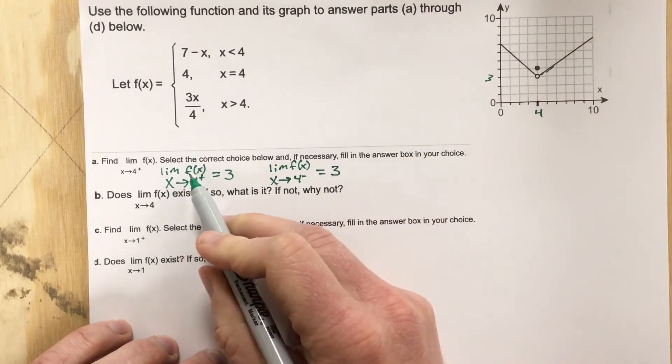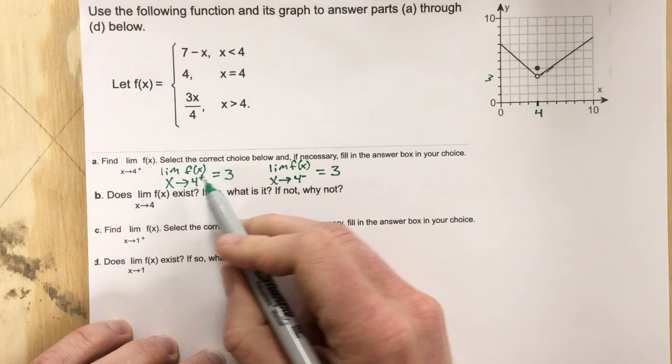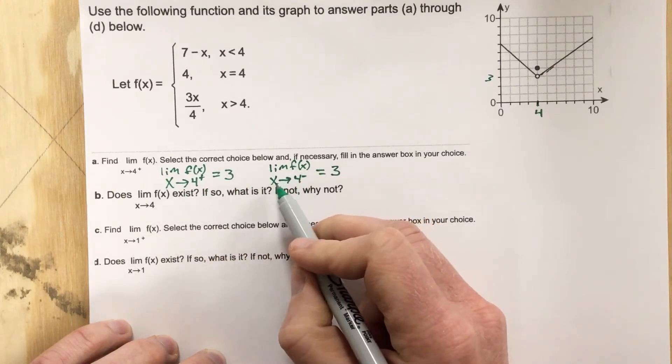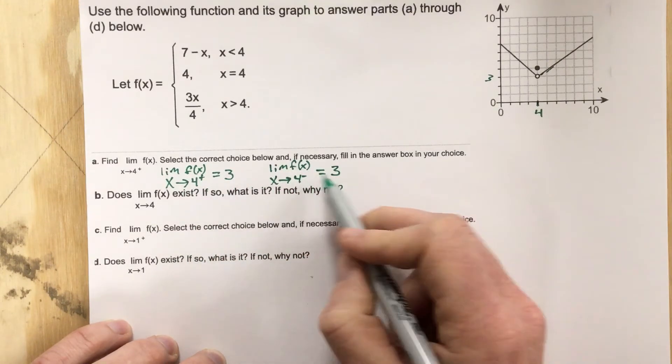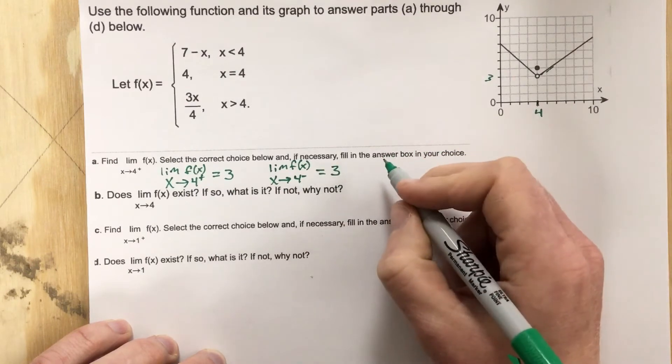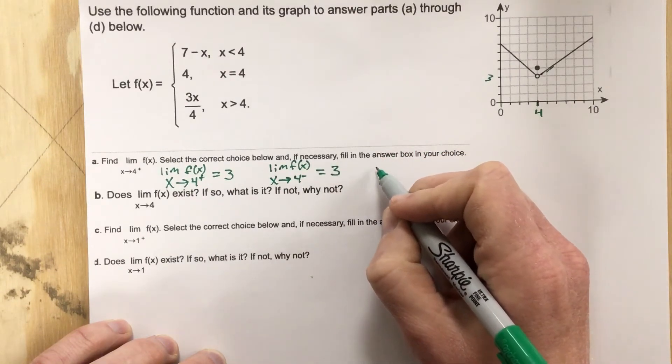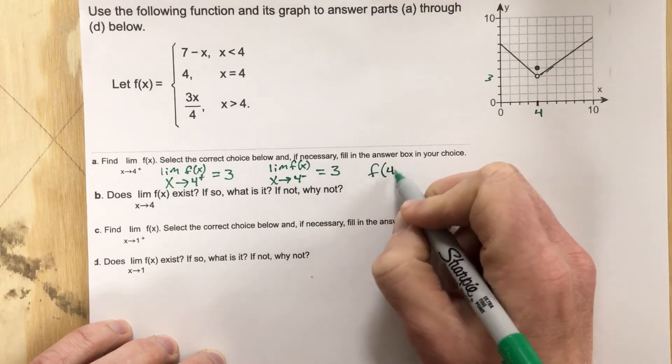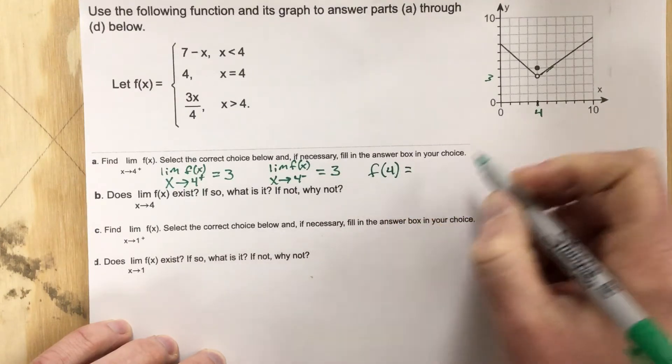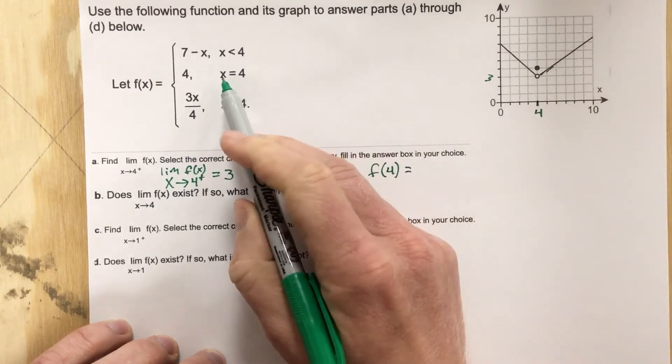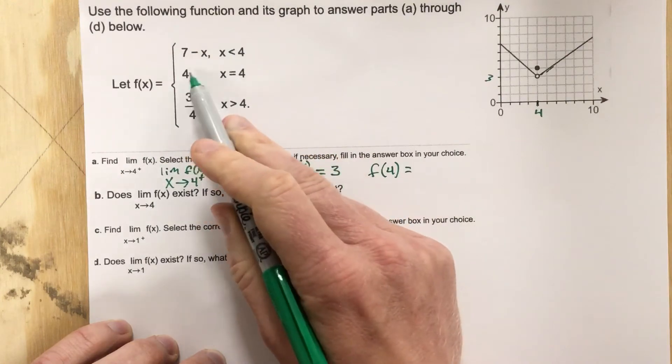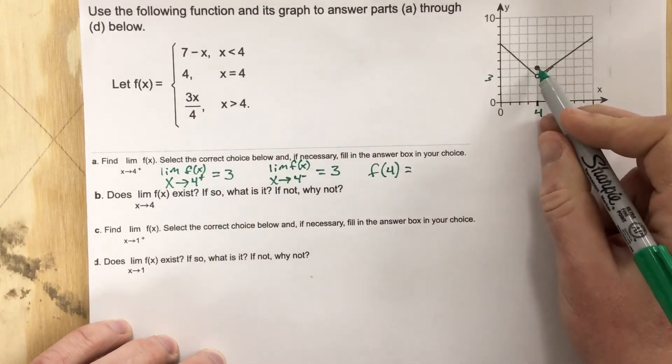So I have the limit of f(x) as x approaches 4 from the right and I have the limit of f(x) as x approaches 4 from the left, both being 3. Well I want to know, is this function defined at 4? So what is f(4)? Well f(4), if we go here, it says when x is 4 we get 4. So f(4) is 4.